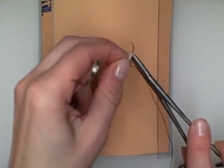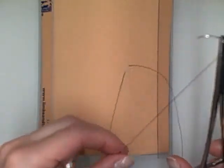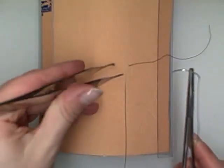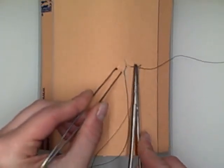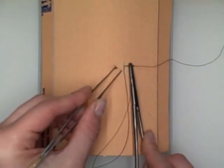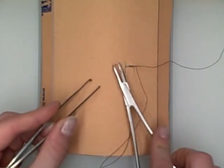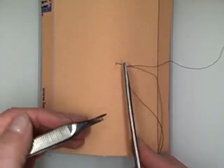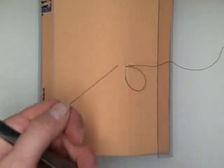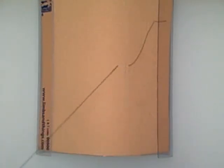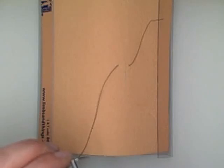The horizontal mattress suture is an inverting suture technique. It spreads tension along a wound edge. This technique is commonly used for pulling wound edges together over a distance or as the initial suture to kind of anchor two different wound edges together.